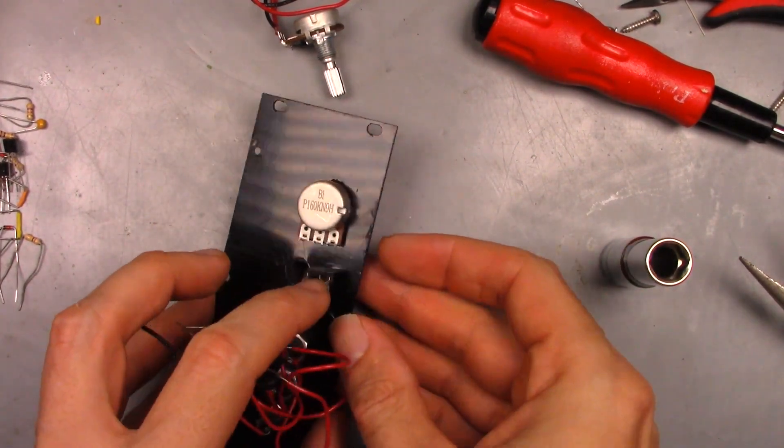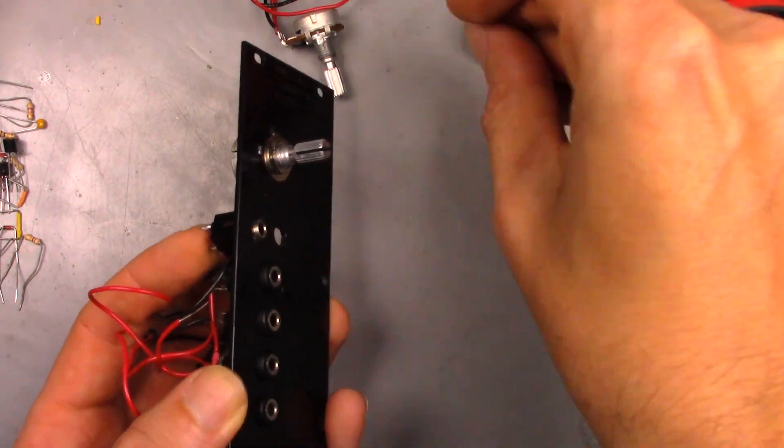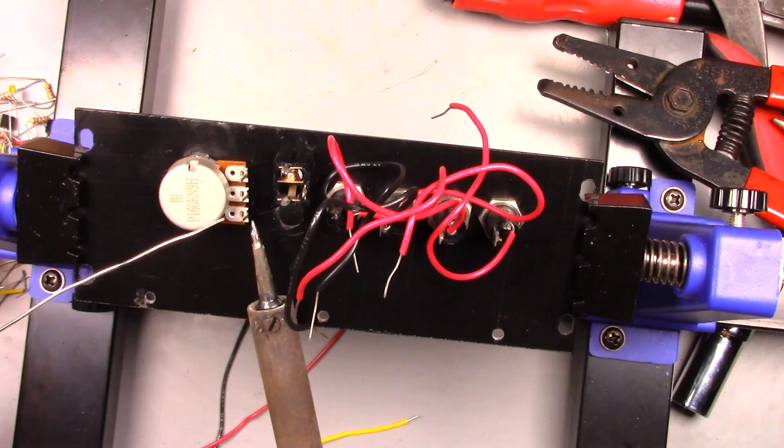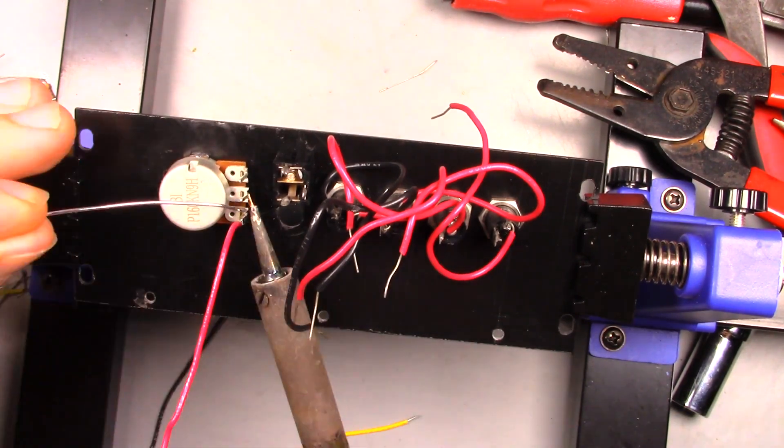Once the potentiometer is mounted, a stereo jack can also be mounted to the faceplate. I already had a hole drilled from a previous project, so I used that. Now to add some wires to be able to plug the new parts into the breadboard, and we are done with the modifications.